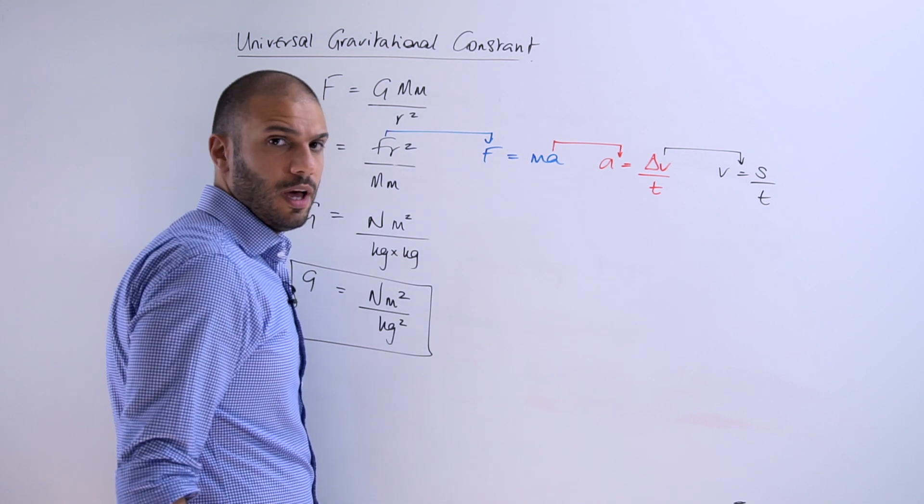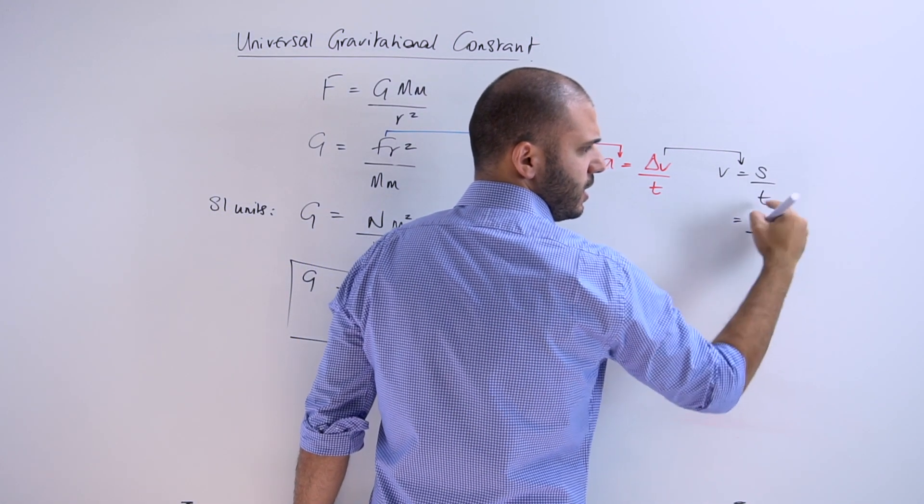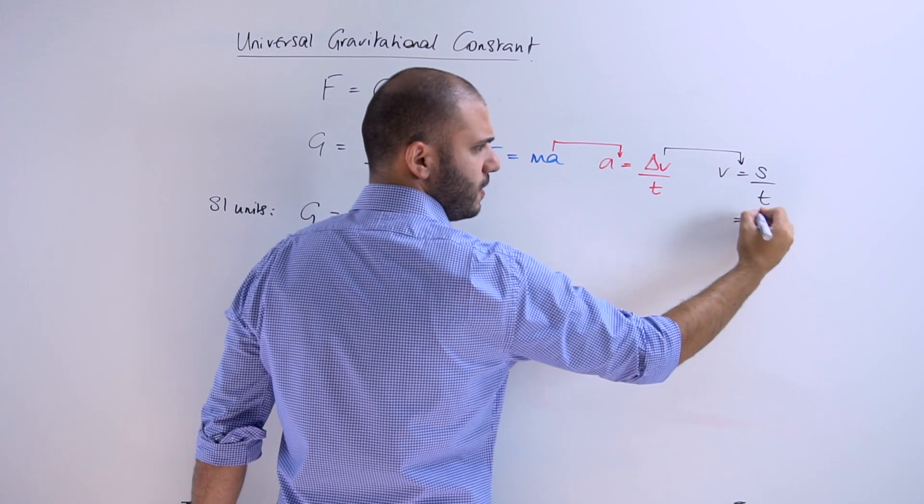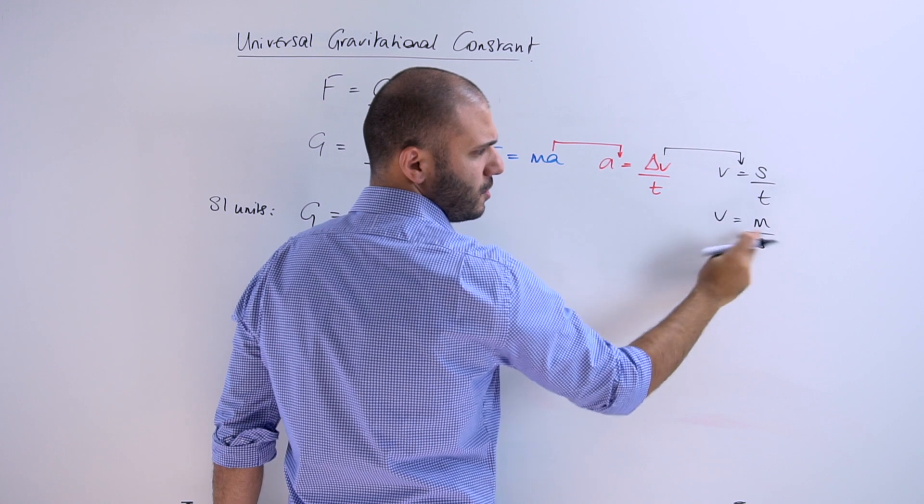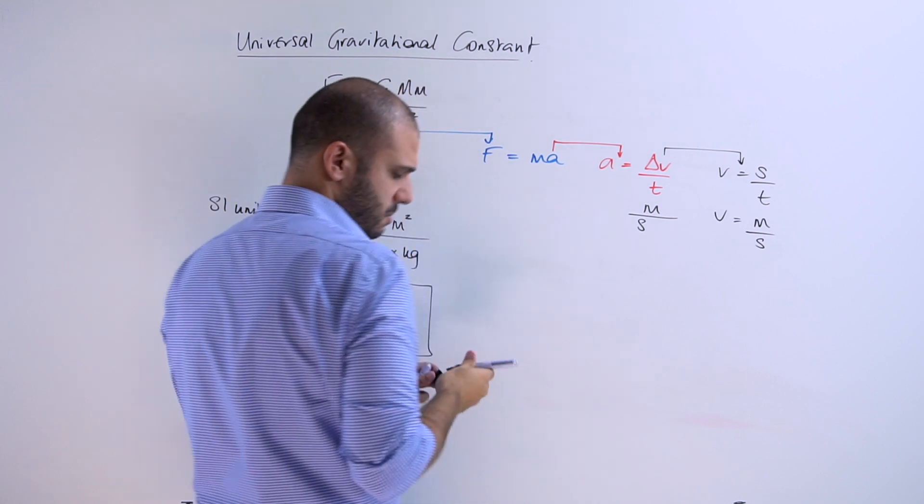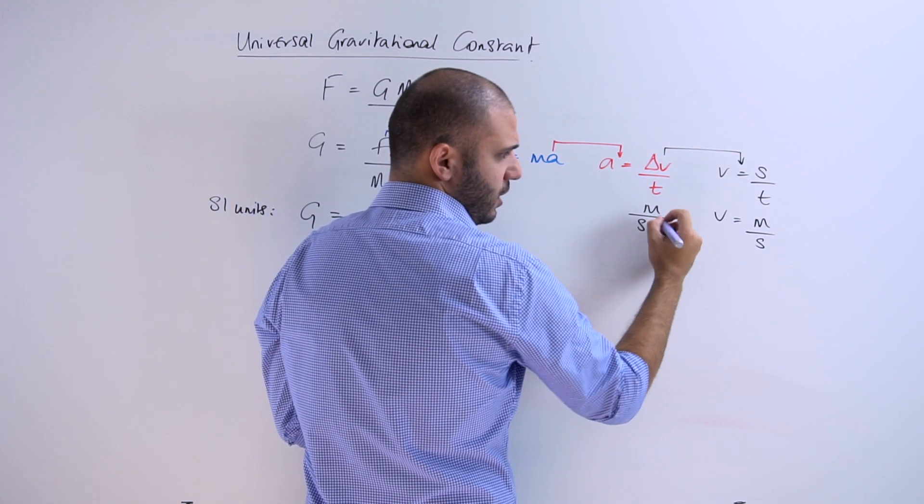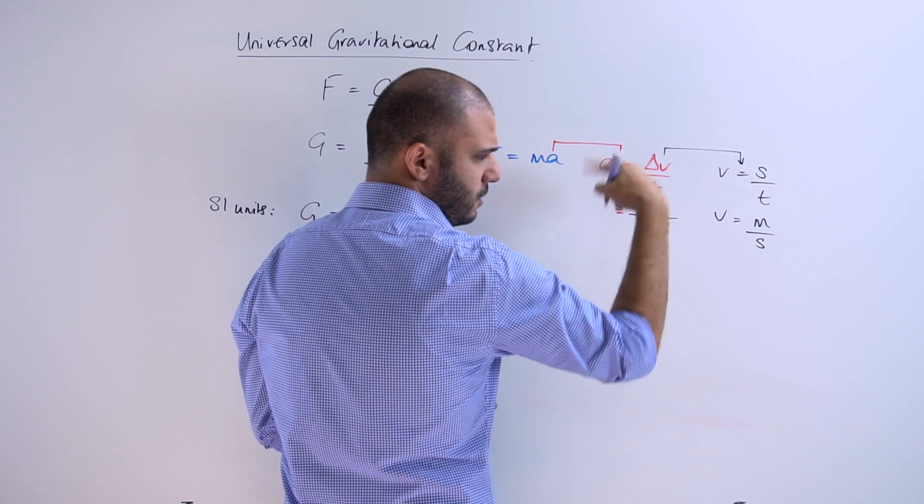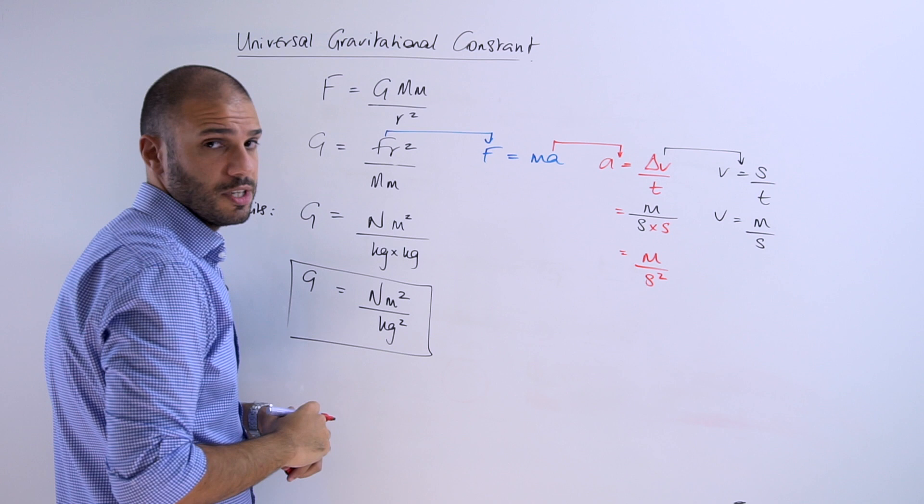So S is distance. Time is seconds. The velocity is in meters per second. Those are the units for velocity. So I can replace velocity with meters per second. But in the denominator there, I've got another second. So that will give us base units for acceleration as meters per second squared.